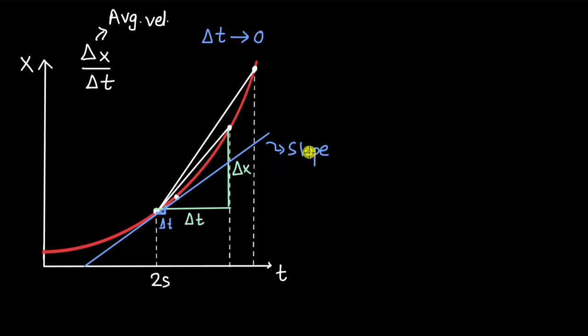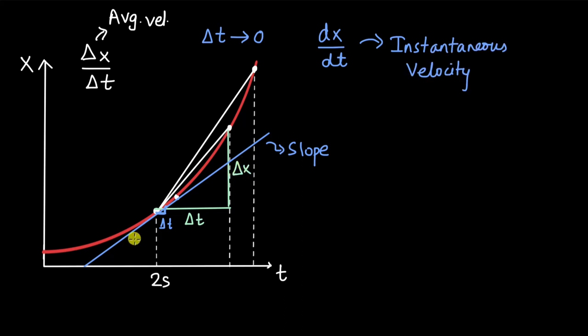The slope of the tangent gives us the instantaneous velocity — in this case at time two seconds. In calculus, when delta t becomes almost zero, you also have an extremely small delta x also tending to zero, and the way of writing this is dx divided by dt — this is the instantaneous velocity. The tangent here is making an acute angle with the x-axis, meaning it has a positive slope, which tells us the instantaneous velocity is in the positive x direction.